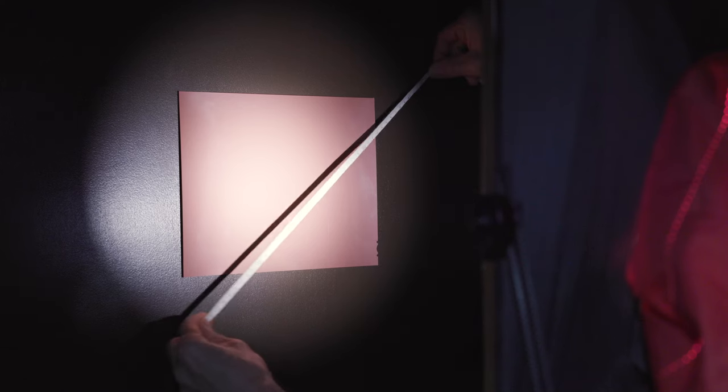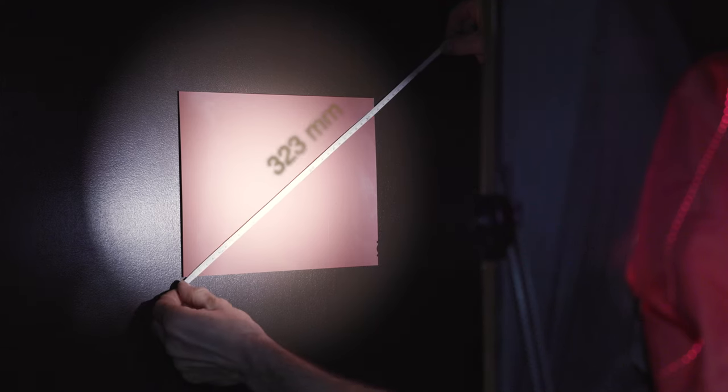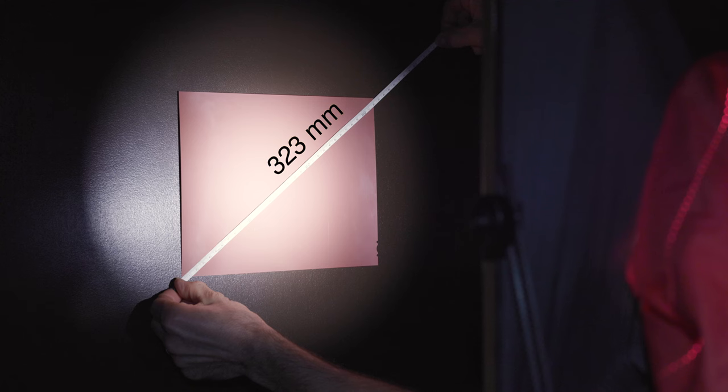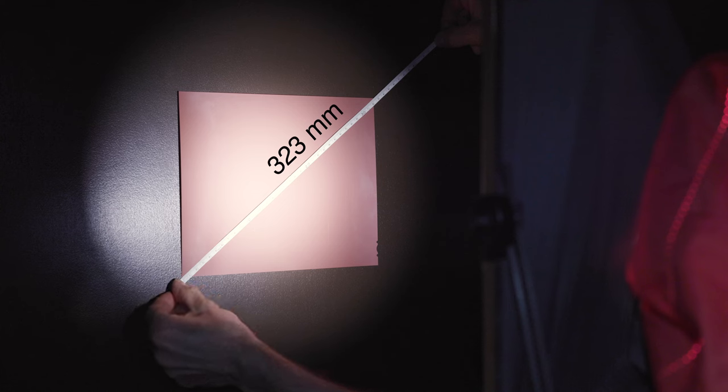Why should I care, Tony? Let's break it down. We know that a piece of 8x10 film measures approximately 323 millimeters in diameter from corner to corner. Keep in mind that the film holder covers some of the edges of the film, so the surface area available for exposure is slightly less than 323 millimeters.